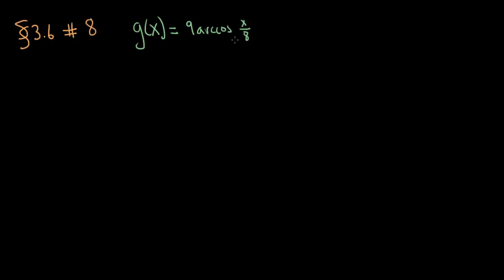The only thing kind of tricky here is that we have x over 8 in the argument here. Now, just to be clear here, there are parentheses here like that. We don't usually write them, but they are there. So we have 9 times arc cosine x divided by 8.